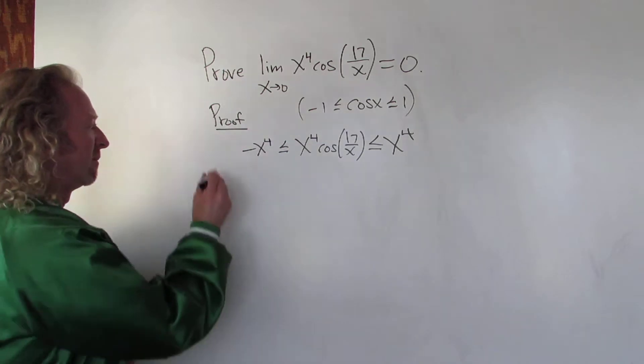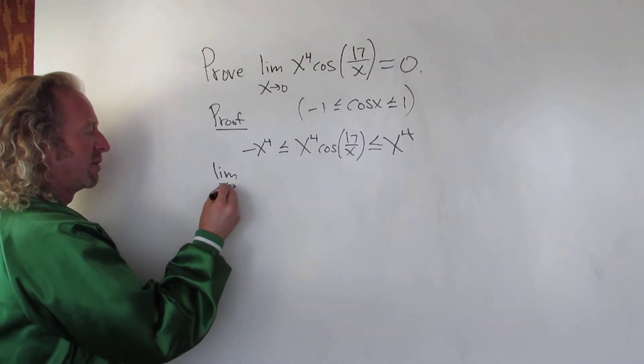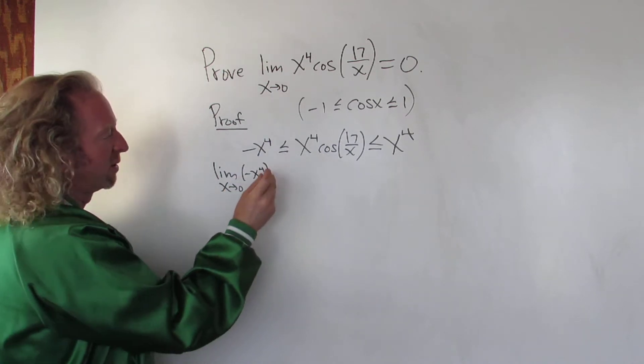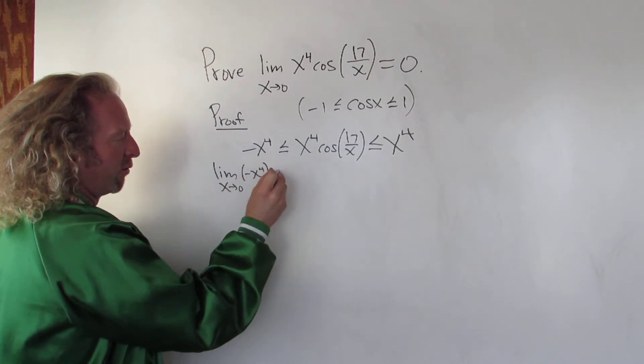Now we take the limit here, the limit as x approaches 0 of negative x to the 4th. Well this is easy. You can just plug in 0, so you just get negative 0 to the 4th, so you get 0.